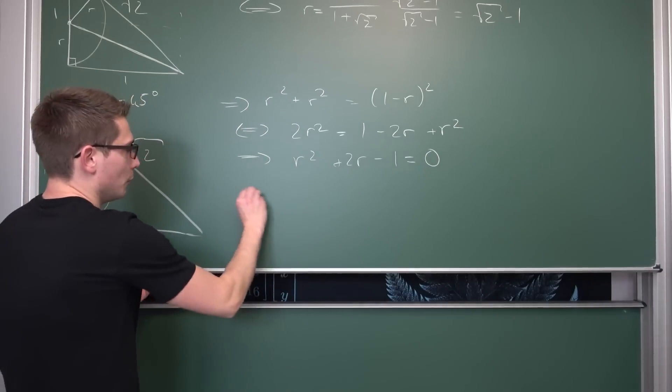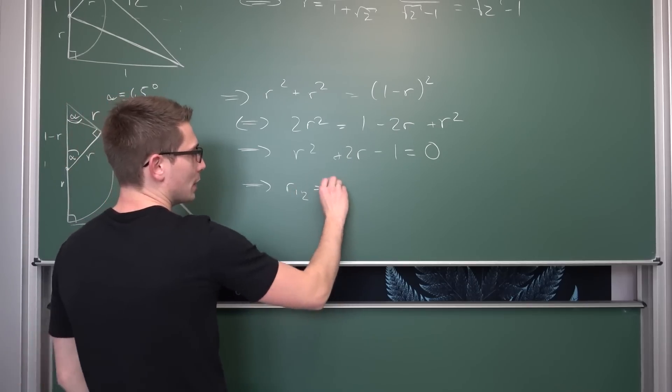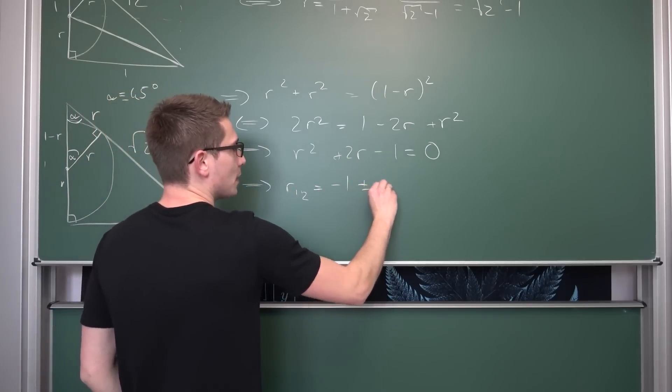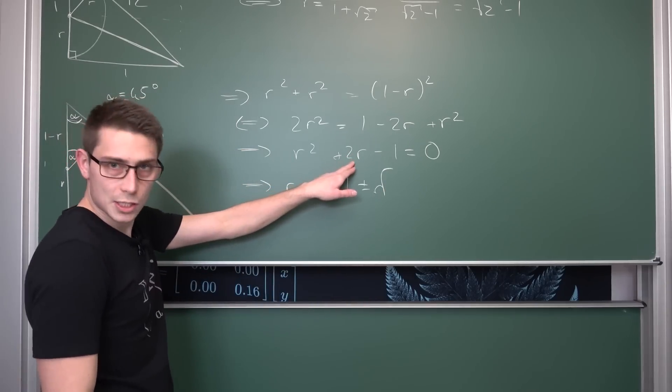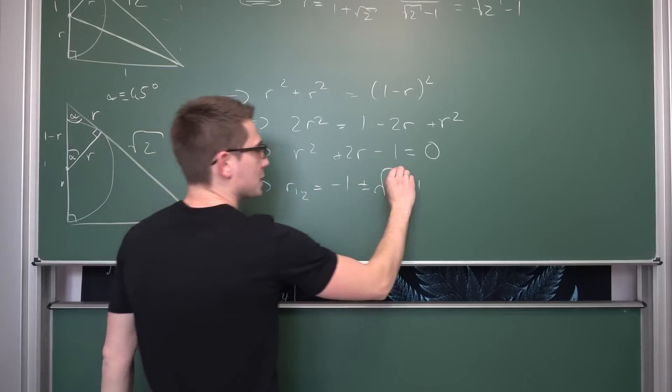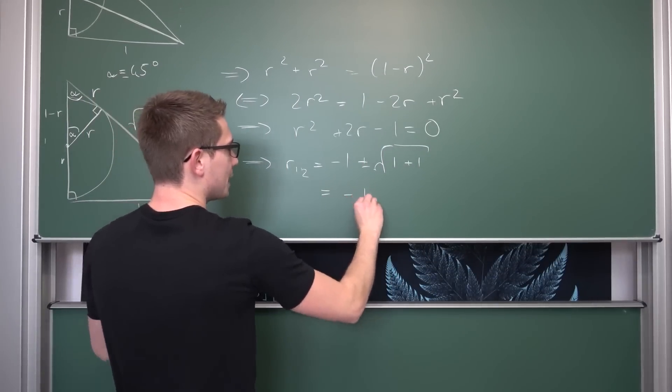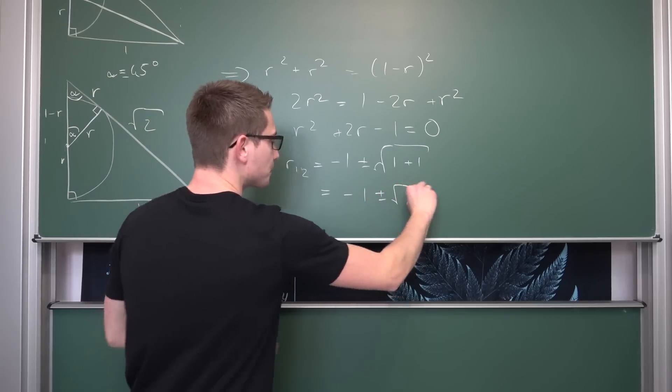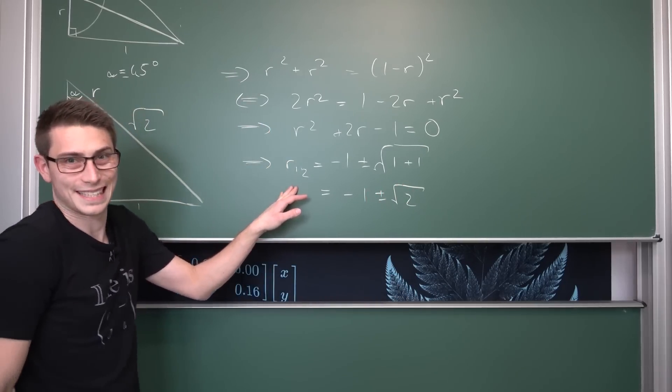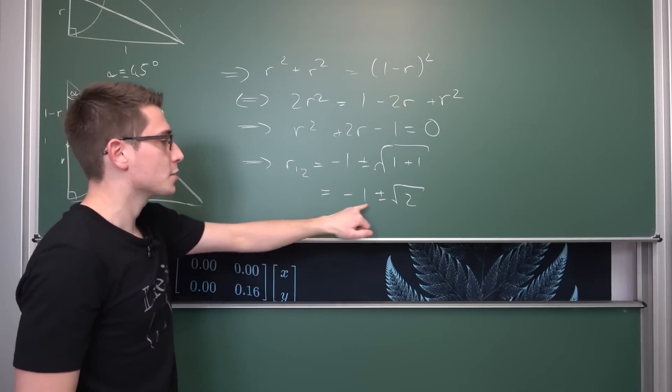And this just screams for the quadratic formula. Meaning overall, two values of r being hence nothing but, we are going to get negative 1 plus minus the square root of 1 squared is going to be just 1, and then negative negative becomes positive 1. So we are going to get overall negative 1 plus minus the square root of 2.